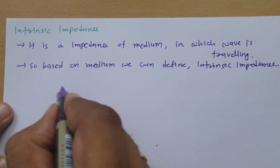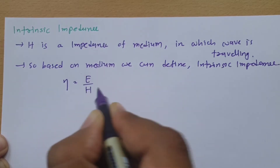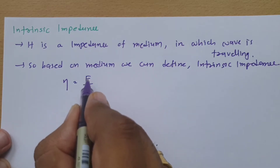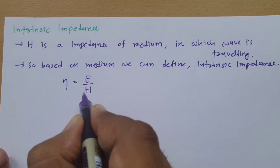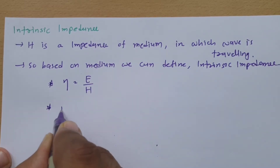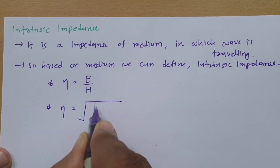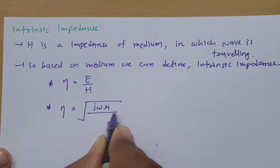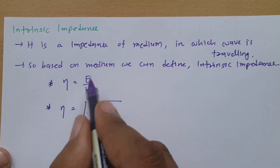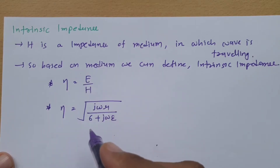The basic formula of intrinsic impedance is electric field divided by magnetic field. One more formula is: intrinsic impedance equals the square root of j·omega·mu divided by (sigma + j·omega·epsilon). These two formulas explain what intrinsic impedance is.